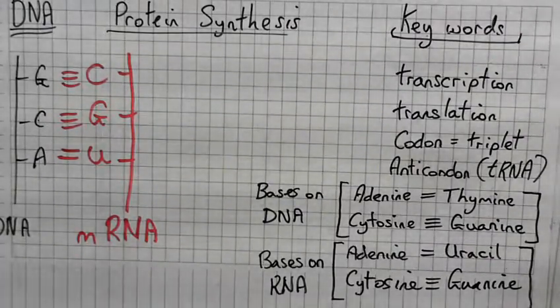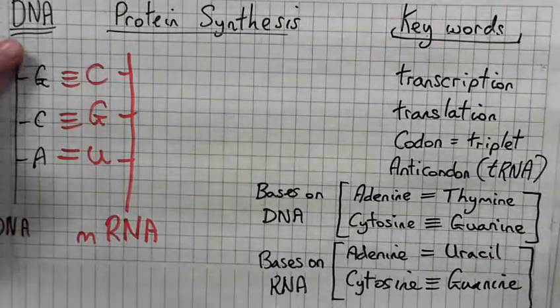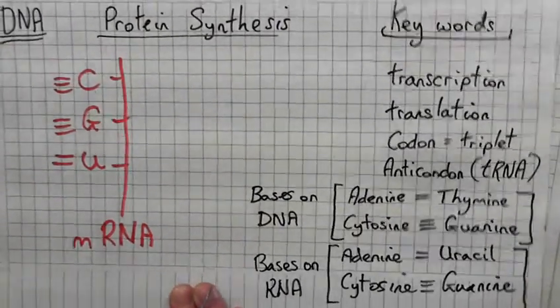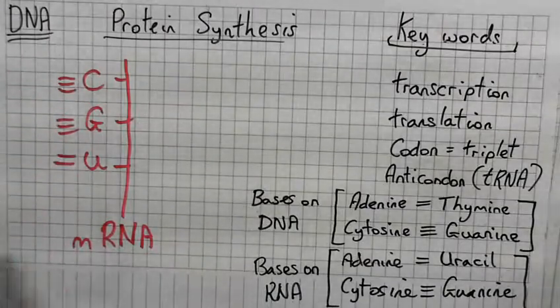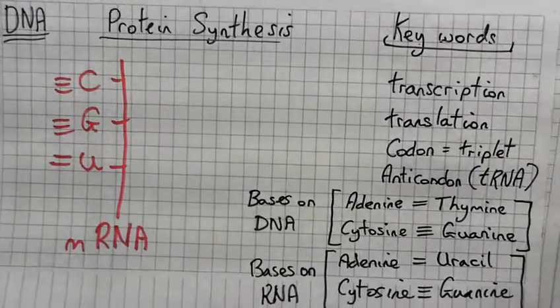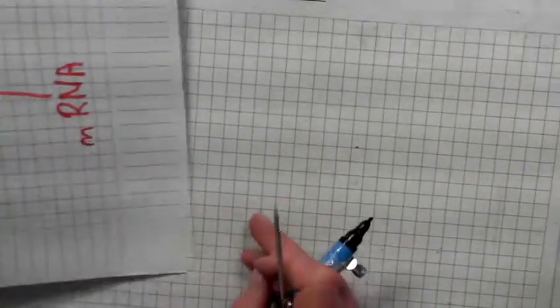When it has copied the gene, it detaches from the DNA strand, the DNA gene. And mRNA travels out of the nucleus and it travels to a ribosome.